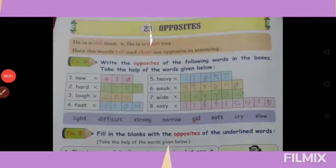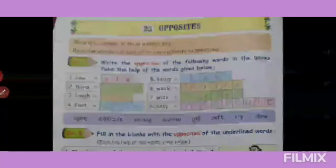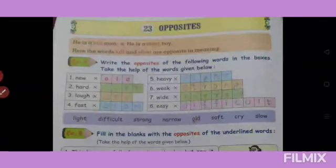Good morning students, lesson 23 — Opposite. This is your English grammar lesson, lesson number 23. See page number 30. He is a tall man. If we say a sentence 'he is a tall man,' then just the opposite — tall ka kya hota hai? Short.